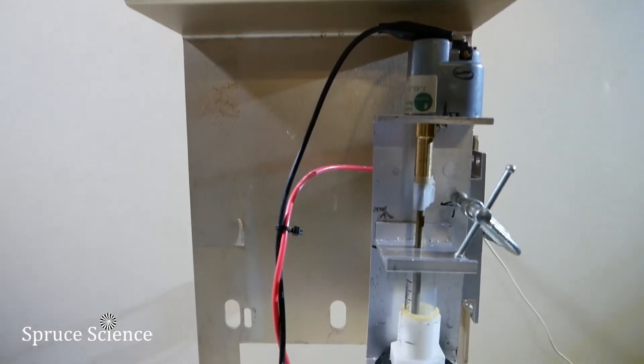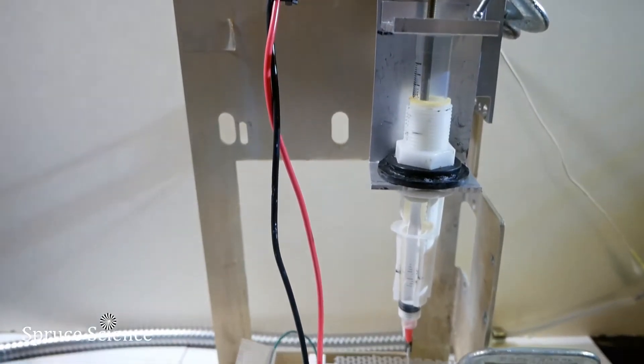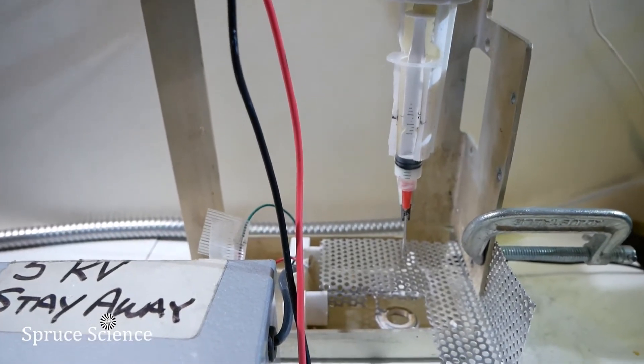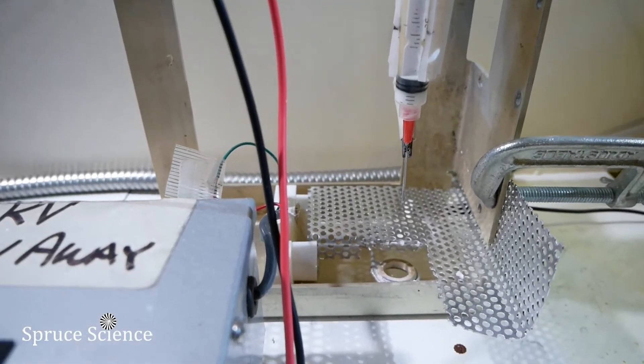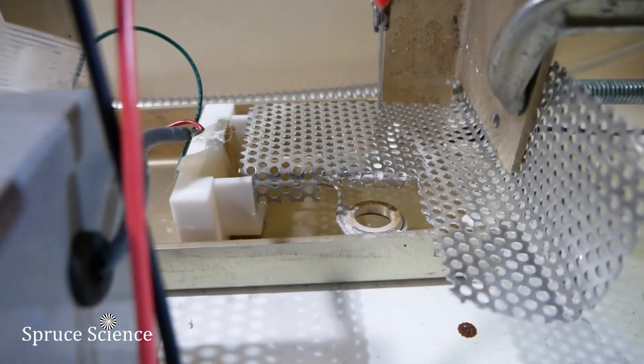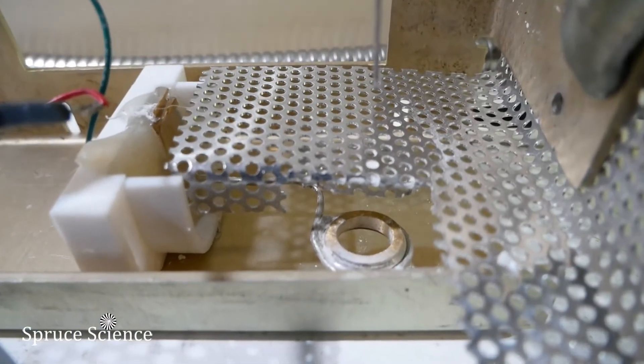Here's the experiment set up. On the top is the syringe pump that consists of a small DC motor that slowly pushes the sample liquid out of the hypodermic needle. Below that is the perforated aluminum sheet that is grounded. Inside of that is the ring electrode that will trap ions.